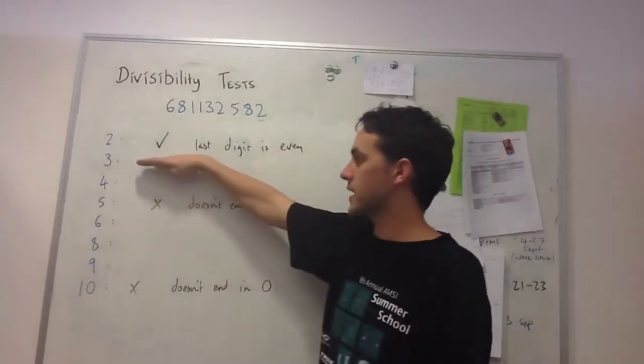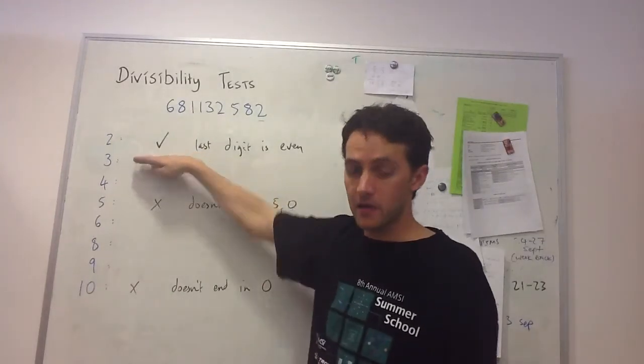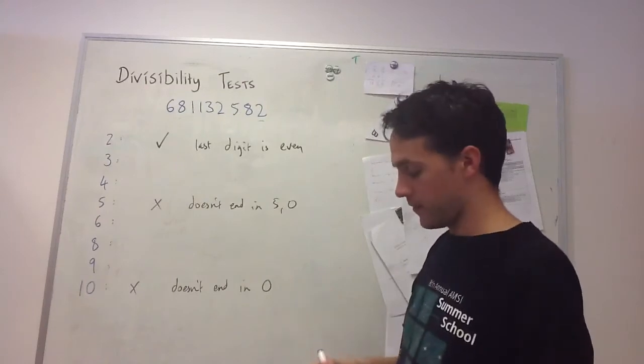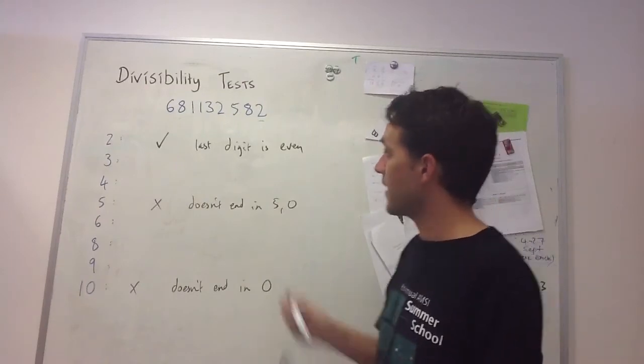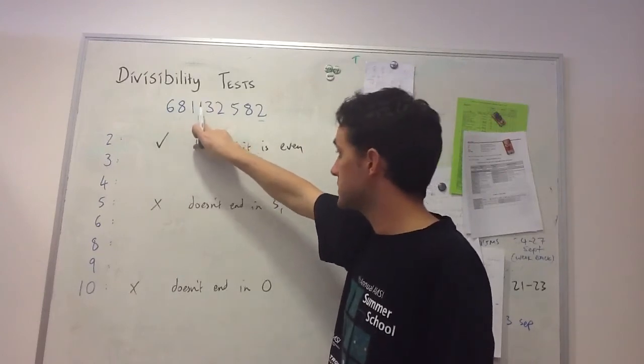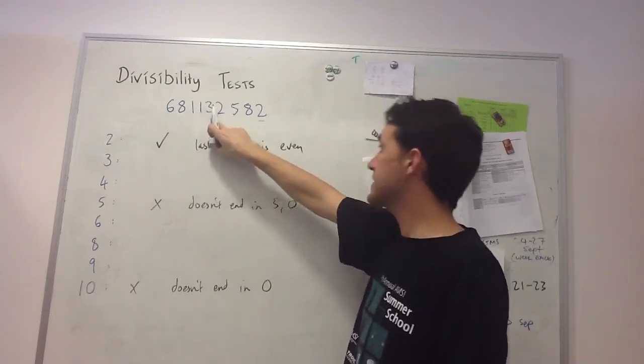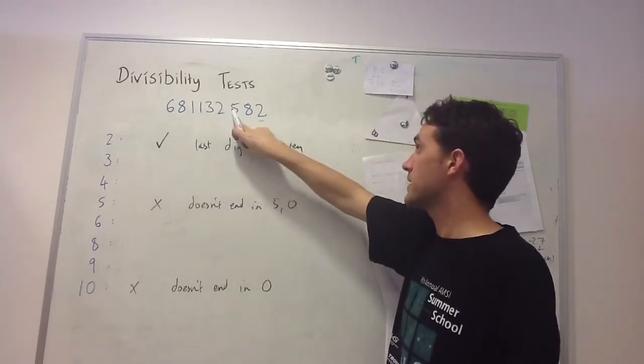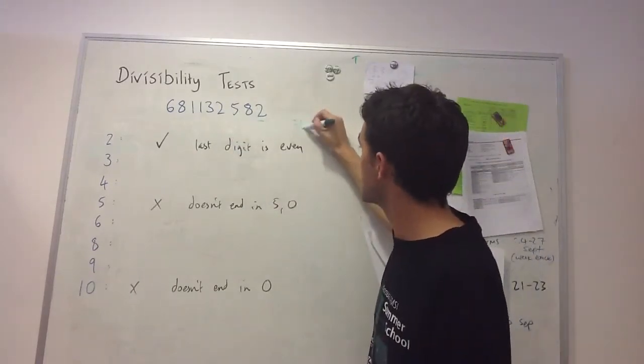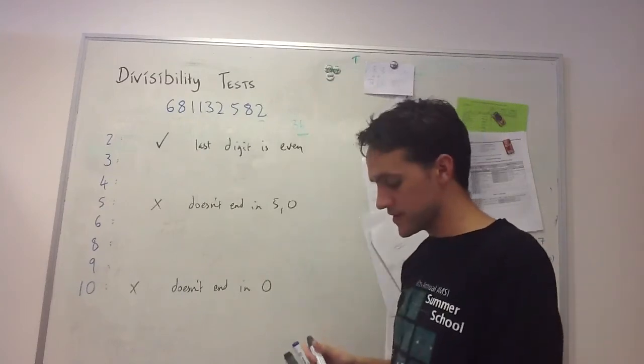To work through the test for 3, I need to find the digital sum by adding all the digits together. 6 plus 8 is 14, 15, 16, 19, 21, 26, then 34, 36. So 36 is the digital sum.